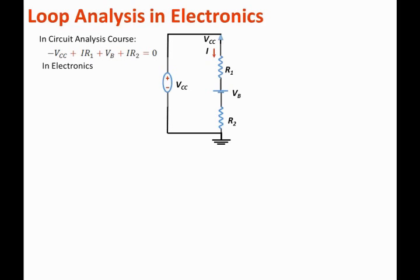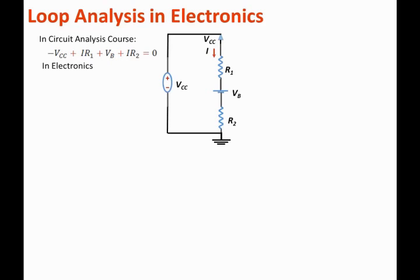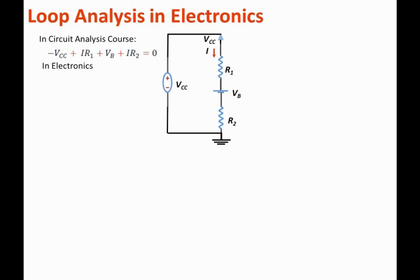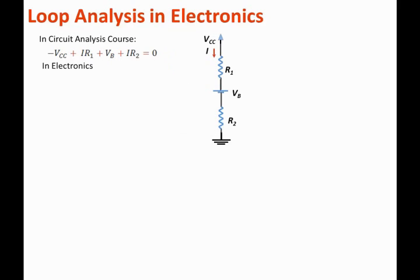In electronics, we do not use voltage sources explicitly in the loop equation. Looking at this circuit as an electronic engineer, you can see it is one loop because you know you can extend Vcc through the voltage source to ground, forming one closed loop. Even though we may not see a fully drawn closed path in the schematic, the circuit diagram clearly shows it is one loop.